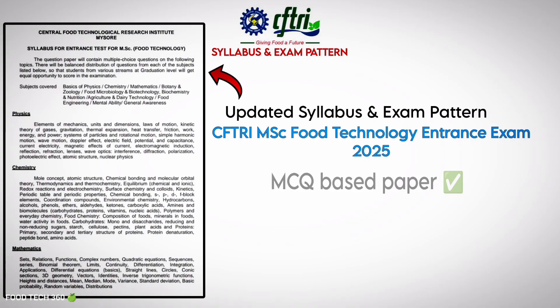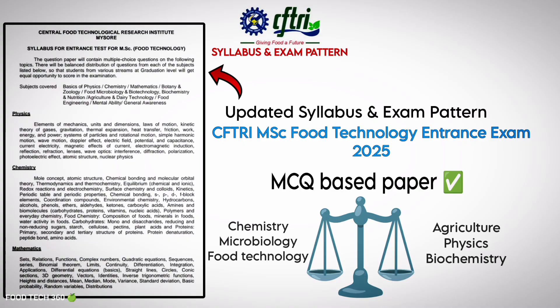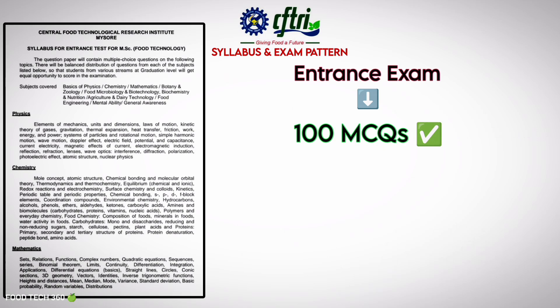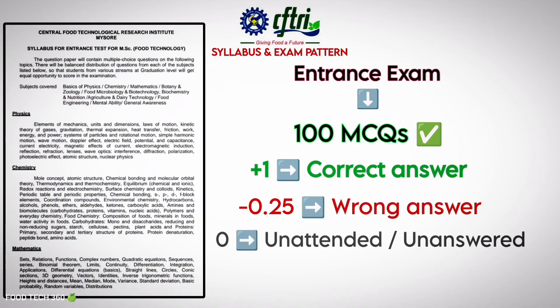The CFTRI entrance exam is MCQ-based and includes questions from a wide range of subjects. It's designed to give equal chances to students from different backgrounds, whether you are from BSc Chemistry, Microbiology, Food Tech, Agriculture, or even Physics. The entrance exam consists of 100 MCQs. One mark will be provided for each correct answer, one-fourth of the marks will be deducted for each wrong answer, and no marks will be provided if the MCQ is unanswered or unattended.